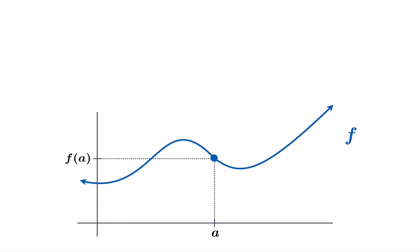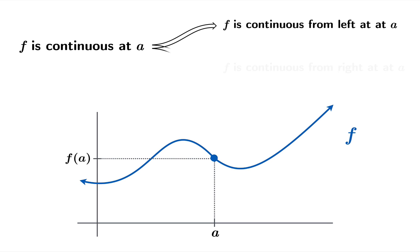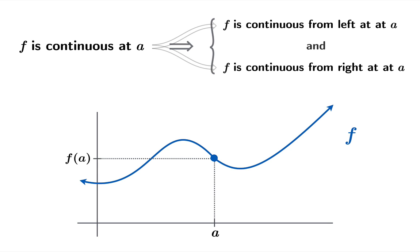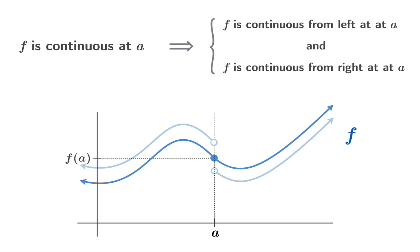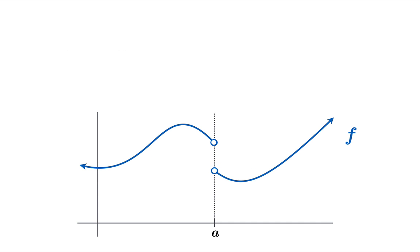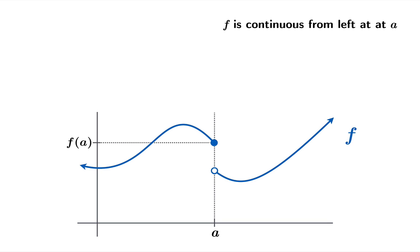Now if a function is continuous at an argument then it's continuous from the left and from the right, so continuity at an argument implies continuity from the left and the right. Let's try to imagine the converse statement.